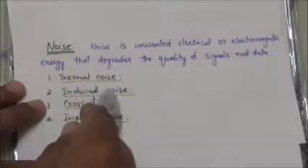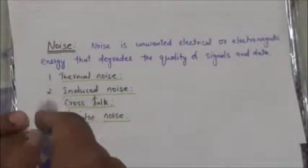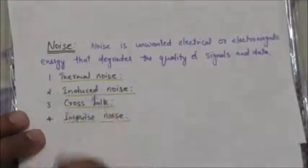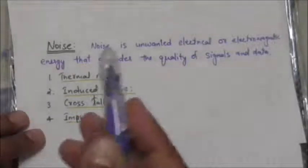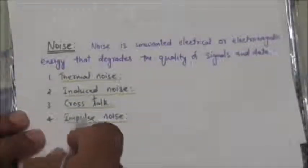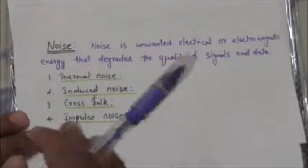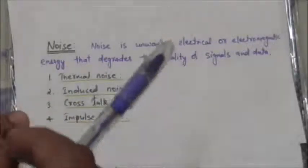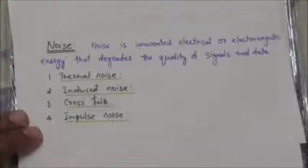Crosstalk is the effect of one wire on another — one wire acts as the sending antenna and the other as the receiving antenna. Impulse noise is a spike signal with high energy in a very short time, coming from power lines, lightning, and so on.